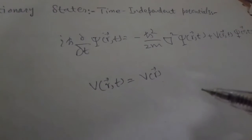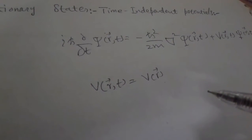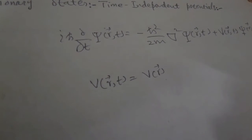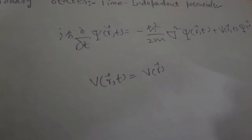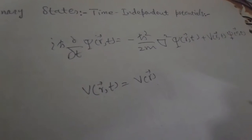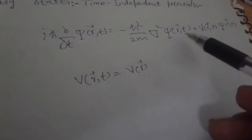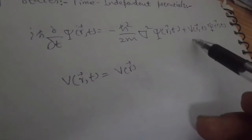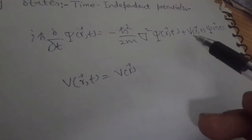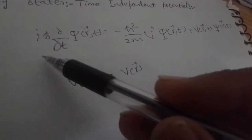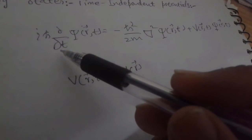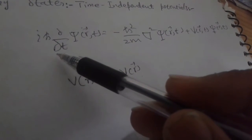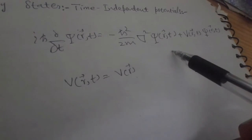The solution of this time-independent Schrödinger equation will be a product of two functions: one which depends on r and the other which depends on time. Why? Because the right-hand side involves the potential and the Hamiltonian, both of which are independent of time, while the left-hand side has ∂/∂t which is the time derivative. So the left-hand side depends on time and the right-hand side is independent of time.